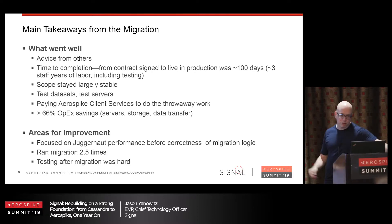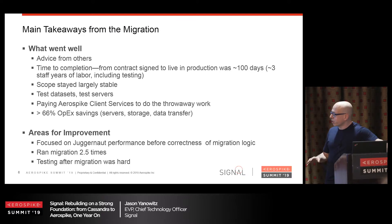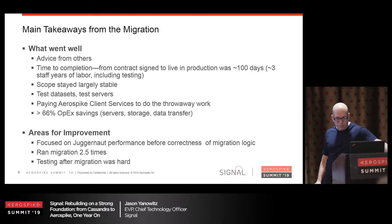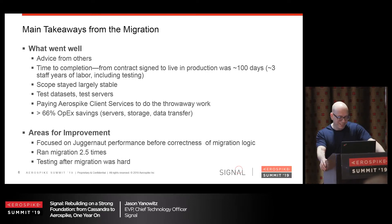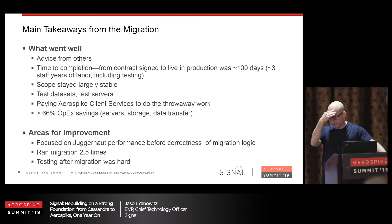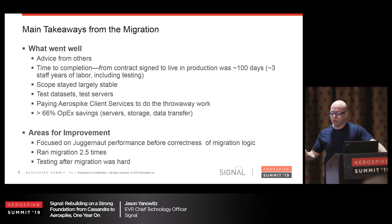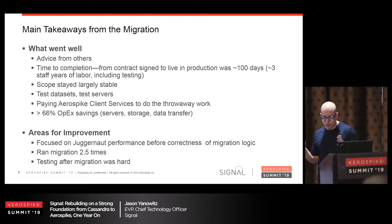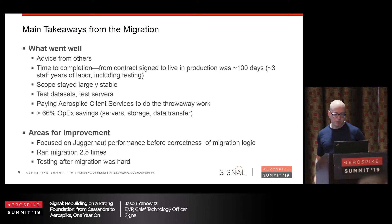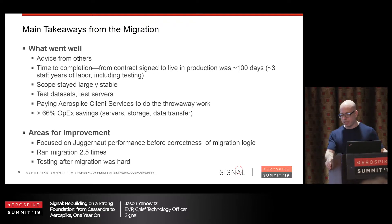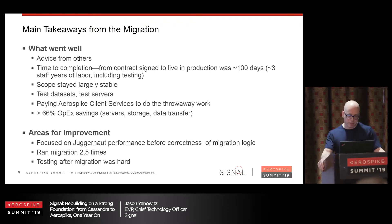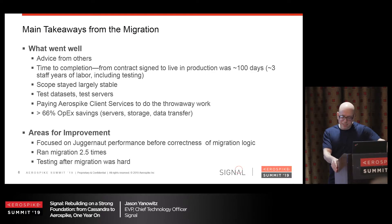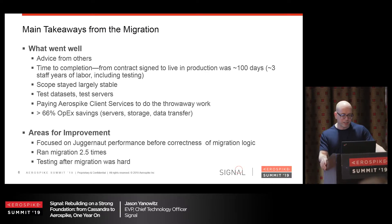Areas for improvement — three big areas, the first two are completely my fault. The first: I was so excited with the performance of Aerospike that I thought, if we could optimize for running the migration over and over and get it down to like a day, that'd be great. So when we got to about 80% correctness, I said let's focus on performance. At the end of the day, the actual migration took six days, and we spent more time than that trying to improve performance. A lesson I already knew and yet had to relearn.